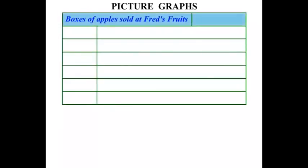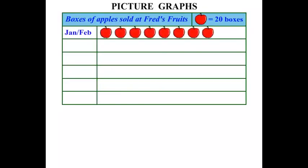In this lesson we're doing some work on picture graphs. In this graph we have boxes of apples sold at Fred's Fruits. We have one little thing here: one apple is equal to 20 boxes. This is known as a key. In January and February we've got so many apples shown, and in March and April a certain amount.